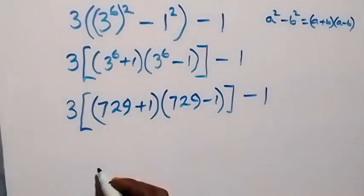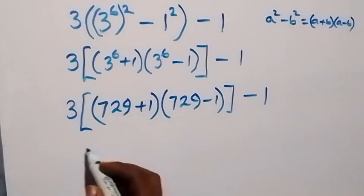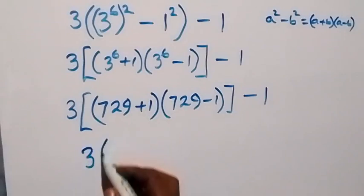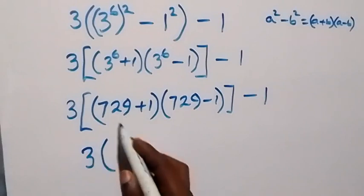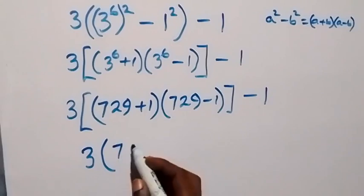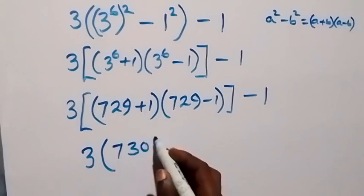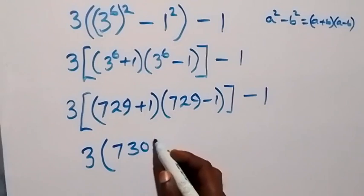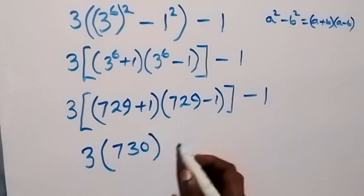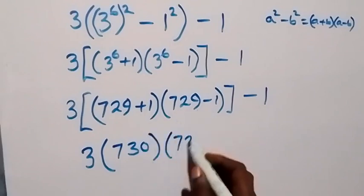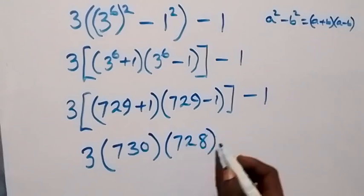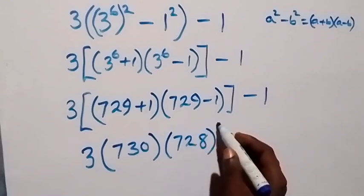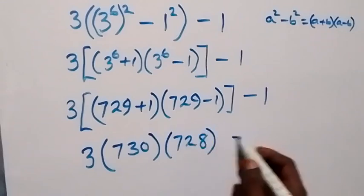This is the same thing as 3 into brackets: 729 plus 1 gives us 730, and 729 minus 1 gives us 728, then minus 1.